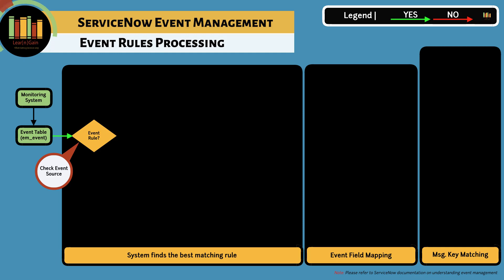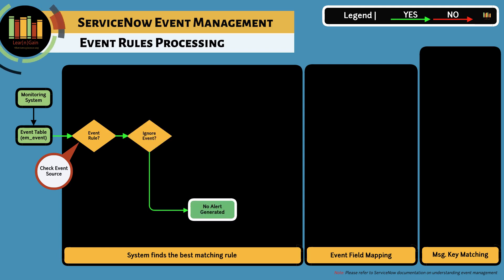An event rule needs to have filter conditions specified. Rules without filter conditions will be ignored. You can also ignore events matching a specific criterion by selecting the Ignore Events checkbox within an event rule.